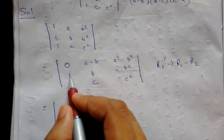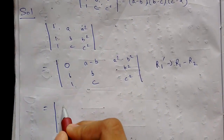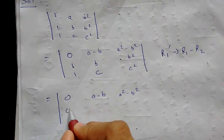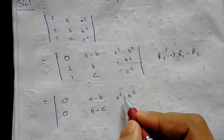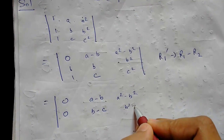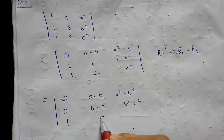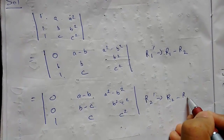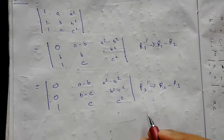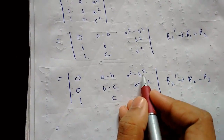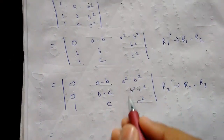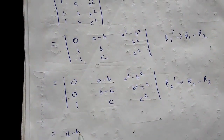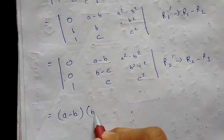Similarly, we will make changes in row 2 — we subtract R2 minus R3. So row 2 becomes: 0, (b minus c), (b² minus c²). Row 3 remains constant. So R2 dash = R2 minus R3. Now we will take (a minus b) common from row 1 and (b minus c) common from row 2.